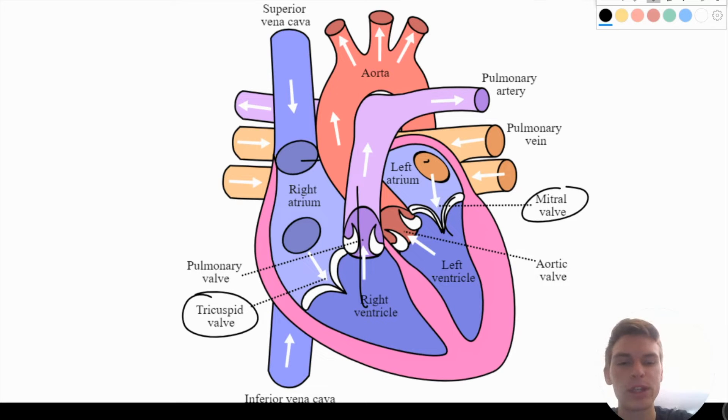Once it flows into the left ventricle, ventricles are going to compress again, and that's going to flow out into our aorta, which then goes into the rest of the body. Now this time, when our ventricles are compressing, we call that systole, and when they're expanding, we call that diastole.